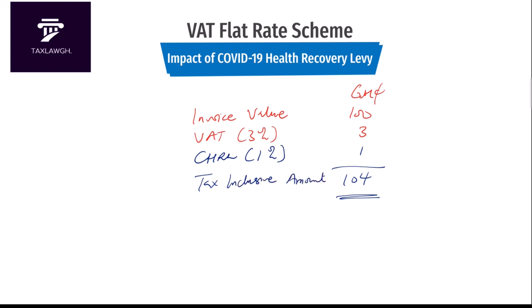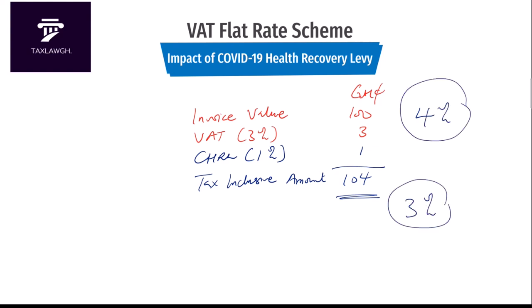For the VAT flat rate scheme, it's straightforward: you compute 3% on your 100 cedis base and also compute 1% on that same 100 cedis base — unlike the standard rate scheme where there is a cascading effect. This gives an effective rate of 4% as opposed to the previous 3%. And as a quick reminder, for those under the standard rate scheme, VAT is now effectively 19.25% as opposed to the previous 18.125%.